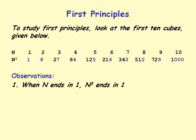Now let's make observations. When n ends in 1, n cubed ends in 1. When n ends in 4, n cubed ends in 4. When n ends in 5, n cubed ends in 5. When n ends in 6, its cube also ends in 6. When n ends in 9, its cube ends in 9. When n ends in 0, its cube ends in 3 zeros. When n ends in 2, its cube ends in 8. When n ends in 8, its cube ends in 2.